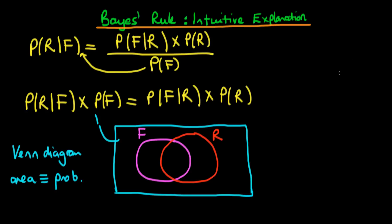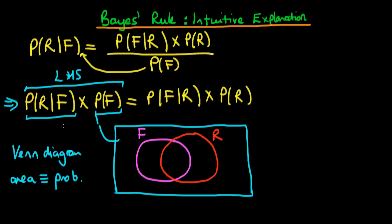Now that we've drawn our Venn diagram, we can think about the intuition behind this rearrangement of Bayes' rule. I'm going to start off with the left-hand side, which is made up of two terms. The first term is the probability that it is forecast to rain — so the event is that it actually is forecast to rain. The second event is that it rains, given that it was forecast to rain. We start by thinking about what's the probability that it is actually forecast to rain, and in this example we are constraining ourselves to lie within the purple circle — we're saying that it is actually forecast to rain.